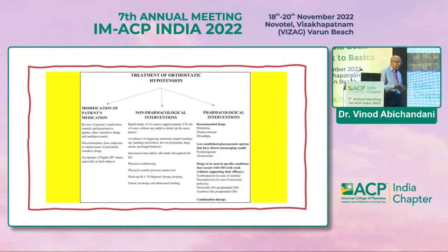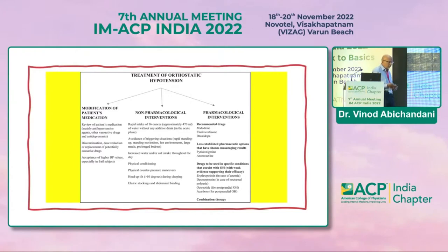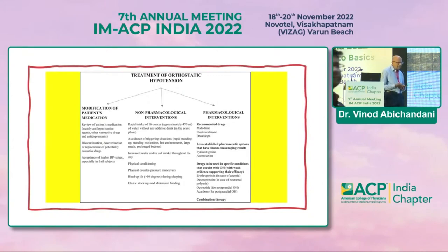For the treatment of orthostatic hypotension, the first step is to review and modify the patient's medications, mainly anti-hypertensive agents, other vasoactive drugs, and anti-depressants. We may choose to discontinue, replace, or reduce the dose. We also have to accept some higher levels of BP, especially in elderly frail subjects, and not pursue aggressive BP lowering.